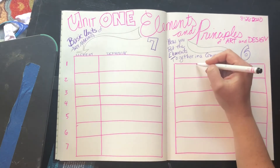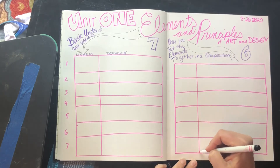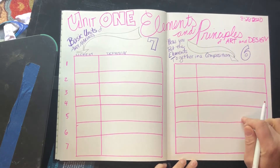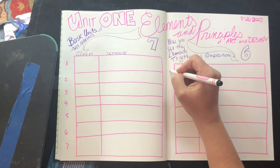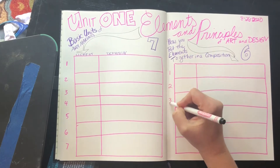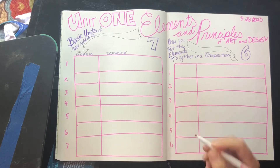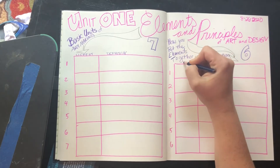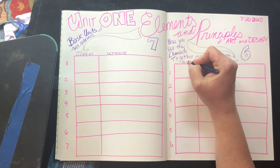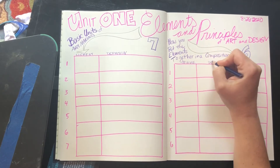I need space for my term, which will be the principle, and space for my definition. Just to keep things even, I number these so they're neat and everything has where it needs to go. I also put 'principle' up here and 'definition' over here.